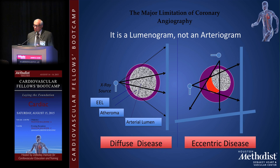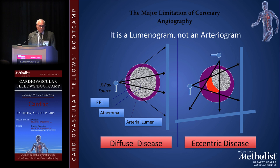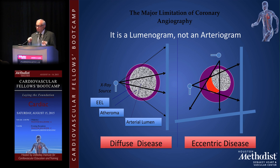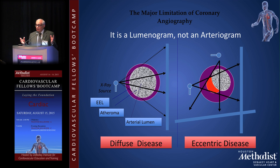A more common situation is an eccentric lesion. If your projection is facing the screen and this is your lumen, you see a nice appearance of the coronary artery. From another angle it also looks fine. Only from the correct projection do you get a true representation. This is why we do multiple views — and generally the worst view is probably the correct one. If you see 70% in one view and 20% in another, that 20% is misleading; the 70% indicates at least an angiographically significant stenosis.